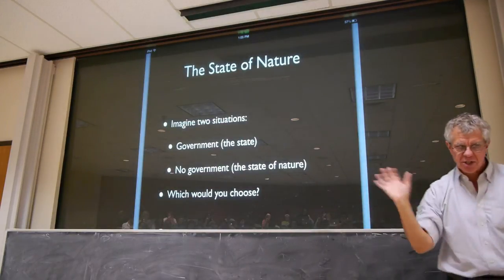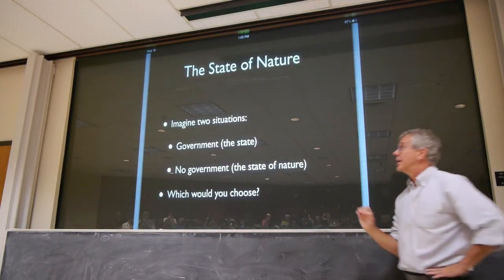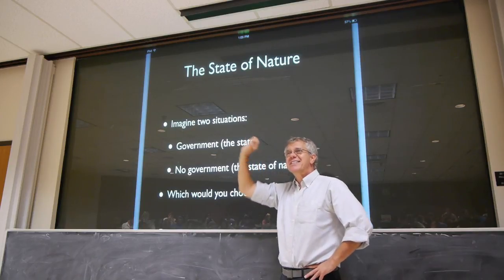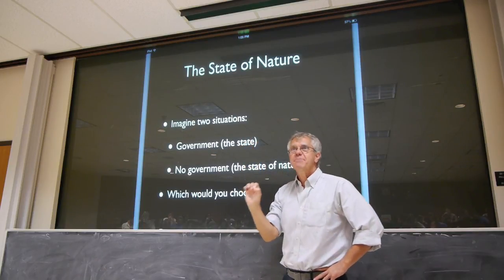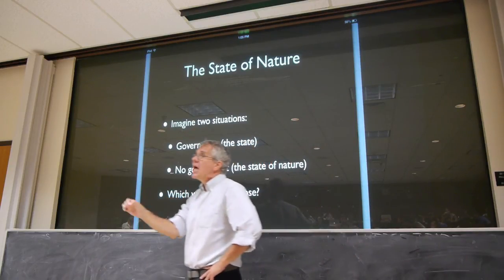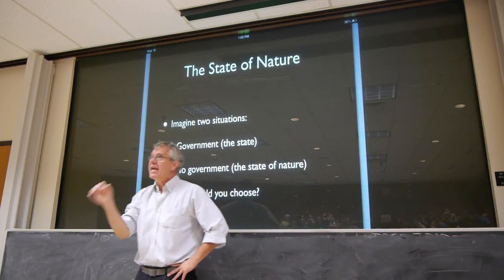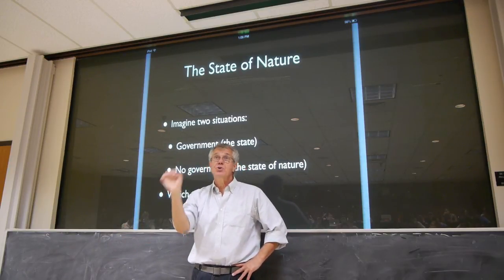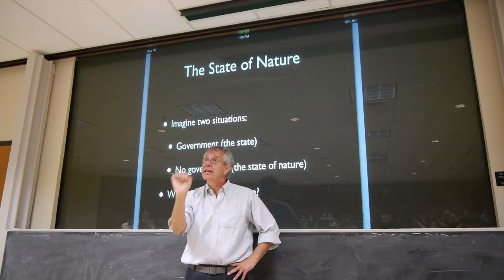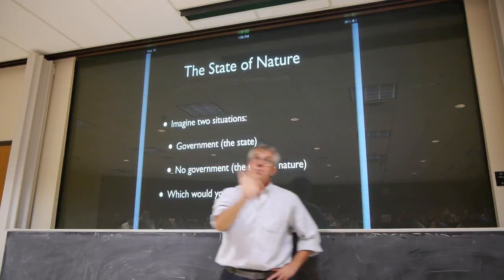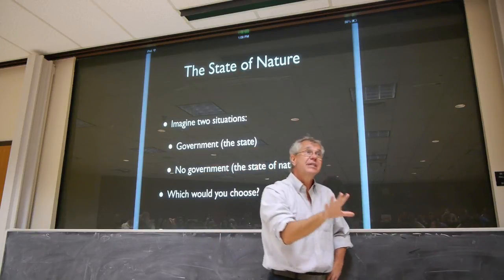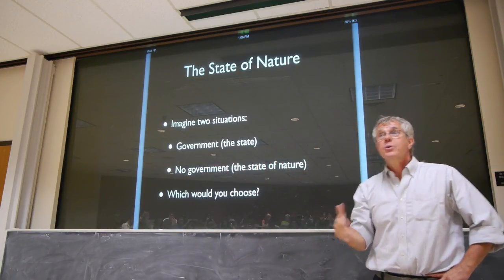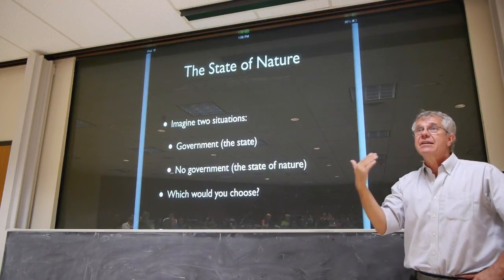Let's focus just on the political situation. The idea is to contrast the state of government — submission to the authority of government — with the state of nature. The state of nature is here understood as just a condition without government, a circumstance where there is no government authority, no government power. So it's really just the state of anarchy.